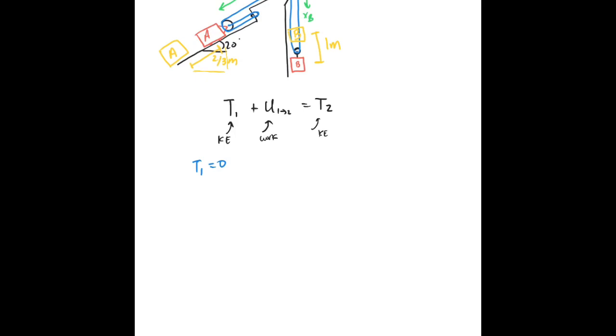So in this example, our T1 is equal to zero because there's no kinetic energy at the beginning. Now for the work from position 1 to 2, this is where we really have to be careful. And if you remember the free body diagrams here, we had A and we had 3T, we had the weight of A, we had the normal force of A, and then we had B that was 2T up and the weight of B down.